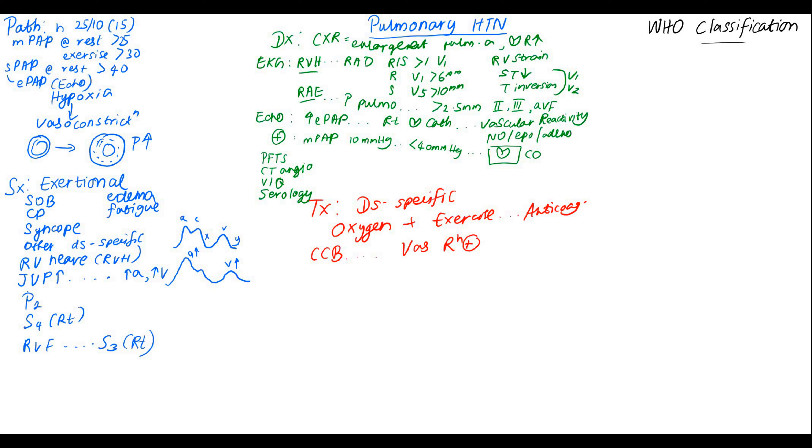Another treatment modality is the phosphodiesterase inhibitors such as sildenafil. Sildenafil was initially created to treat pulmonary hypertension. We can also use prostacyclin analogues such as epoprostenol and these dilate the pulmonary arteries. They are given IV. However, we have the first oral prostacyclin agonist called selexipag.